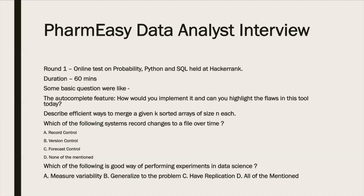For the first round, it was an online test held at HackerInk. The topics covered were probability, Python, and SQL. Questions were of mixed type — MCQ and descriptive. The duration was around 60 minutes. Some questions asked were: describe an efficient way to merge k sorted arrays of size n, or which of the following is a good way to perform an experiment in data science, with options including measure variability, generalize to the problem, have replication, or all of the above. In this round, they wanted to check whether the candidate had domain knowledge.